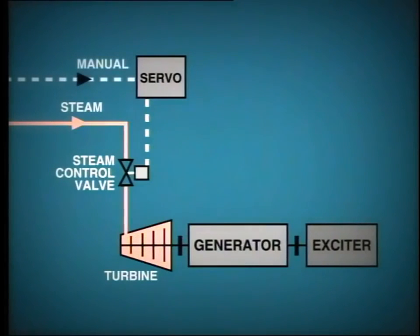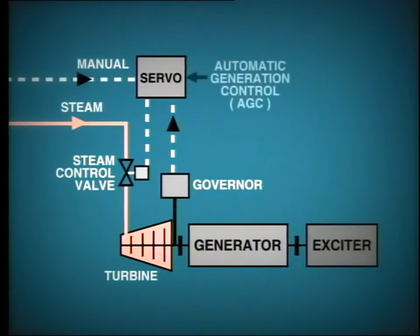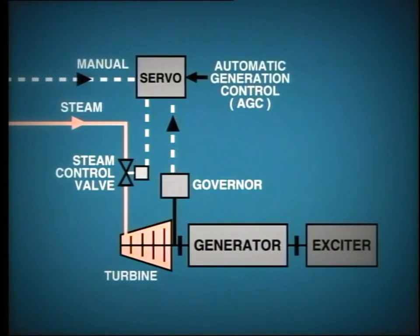Manually by the operator in accordance with predetermined loading instructions or on request from the dispatcher. Automatically by the turbine governor, which responds to changes in turbine speed, which is in turn related to system frequency. Automatically by the dispatcher's AGC, if this particular generator is being used for regulation, that is, to assist in frequency control.